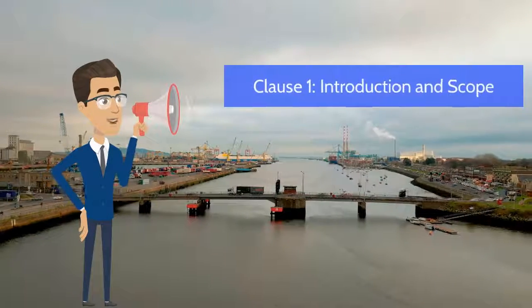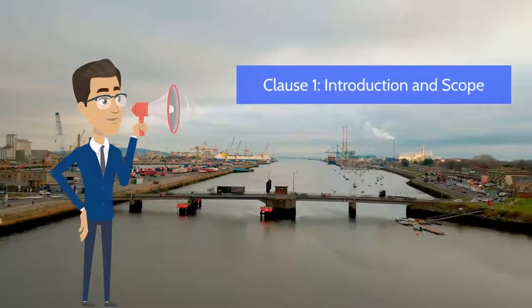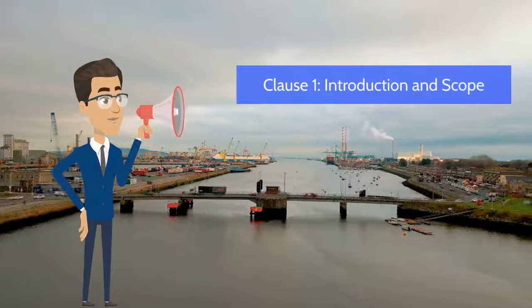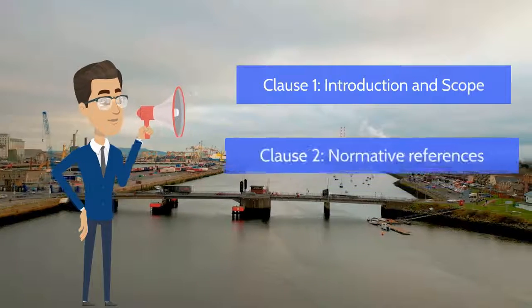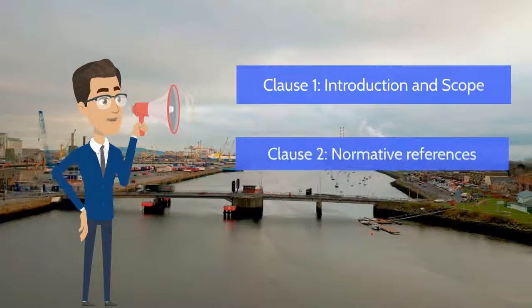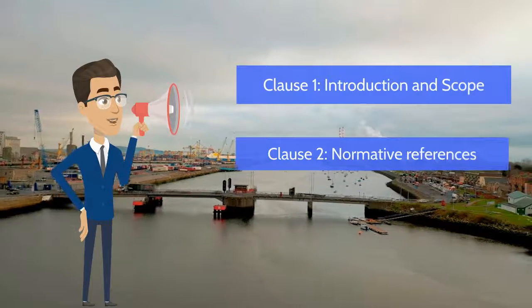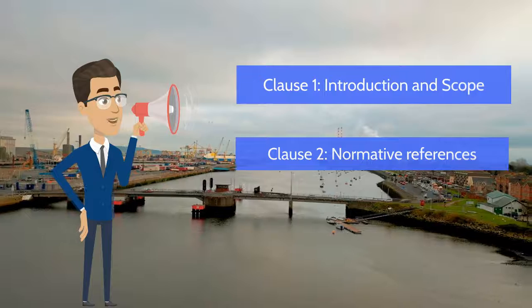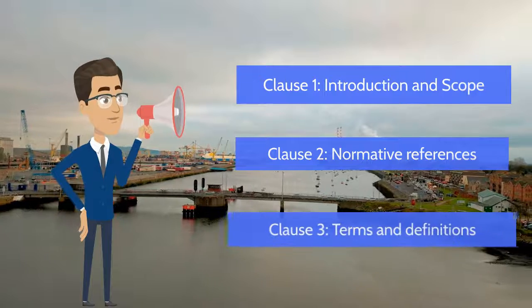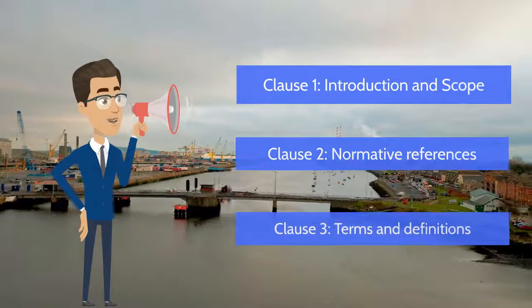Clause 1 is the introduction and scope of ISO 9001. Clause 2 is the normative references of ISO 9001, while Clause 3 is the terms and definitions used in the standard.